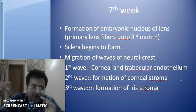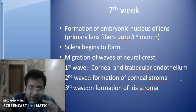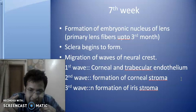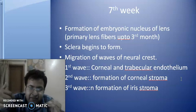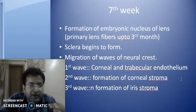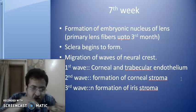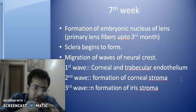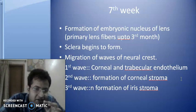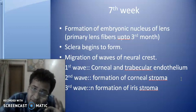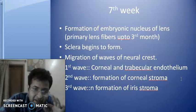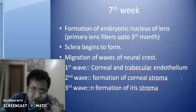The Tertiary Vitreous differentiates into the ciliary zonules, the Secondary into the vitreous proper, and the Primitive Vitreous into the hyaloid system of vessels which disappear by birth. The neural crest cells, derived from mesenchyme themselves, migrate in waves. When the first wave comes, the cornea and trabecular endothelium is laid down. In the second wave, corneal stroma forms. In the third wave, iris stroma is laid down. All these structures are derived from neural crest cells at about the seventh week.